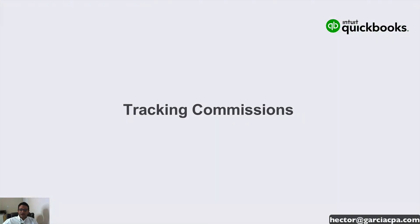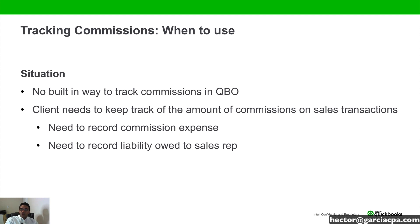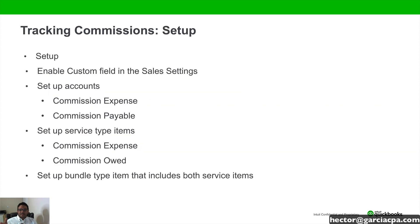The last segment here is tracking commissions. QuickBooks Online does not have a built-in mechanism to track commissions or sales commissions. What we need to do is create a sales rep custom field for invoices and create the actual percentage calculation of that commission inside of the invoice itself. We're going to record that expense inside of the invoice or the sales transaction, which could be a sales receipt, and we're also going to create a liability right on the same transaction.